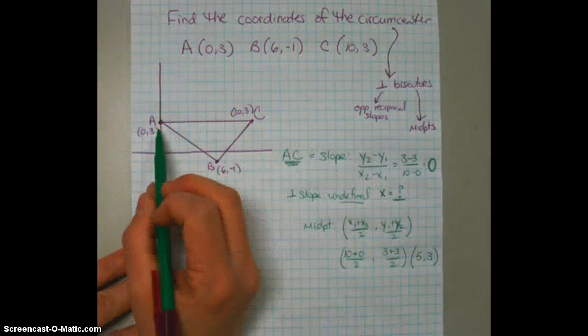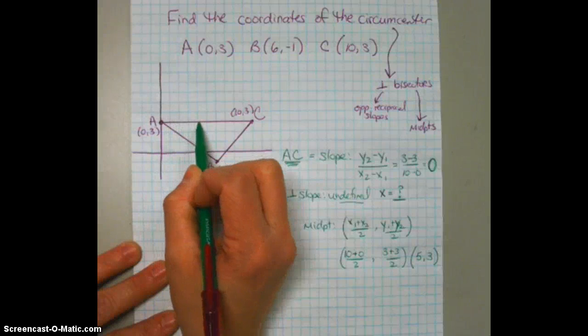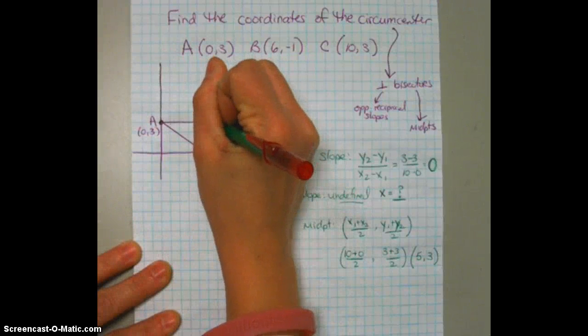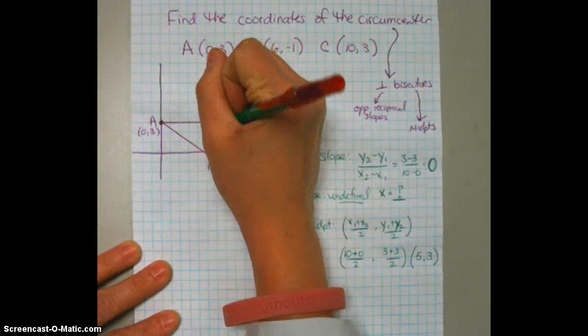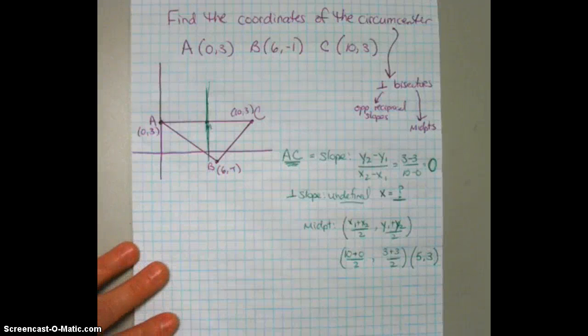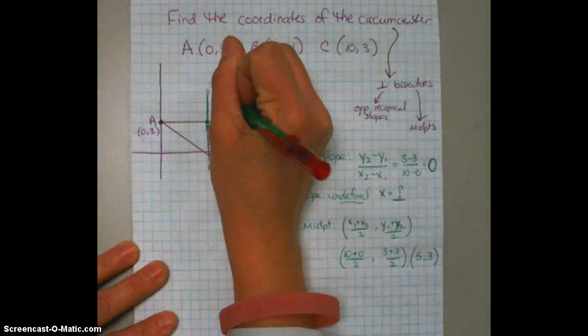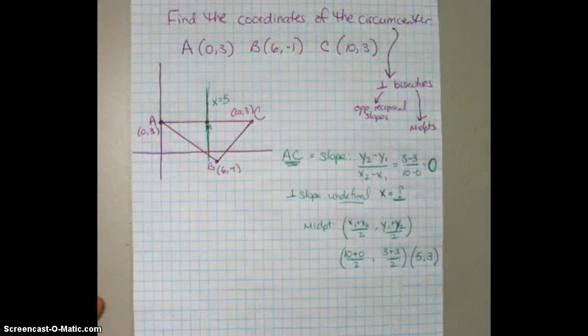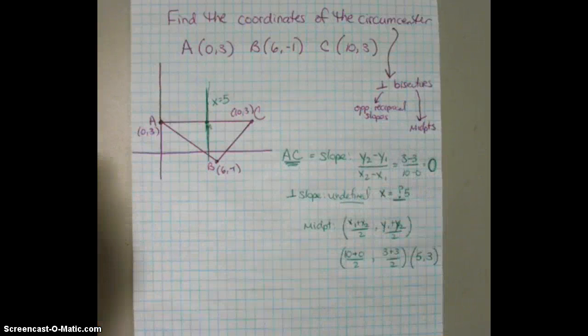So if the perpendicular bisector is passing through the point (5, 3), so this is 1, 2, 3, 4, 5. There's the midpoint here. And it's going to be a vertical line passing through m. So that's where x equals 5. So that means the equation of this line is x equals 5. So I could actually put 5 back in here.